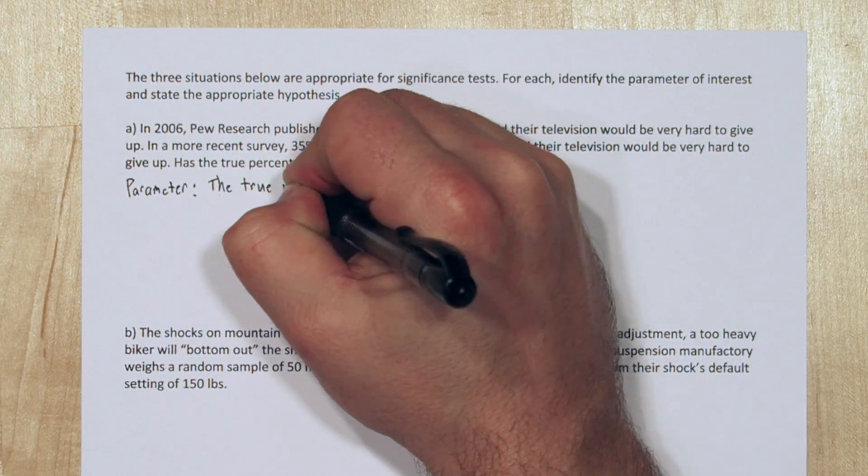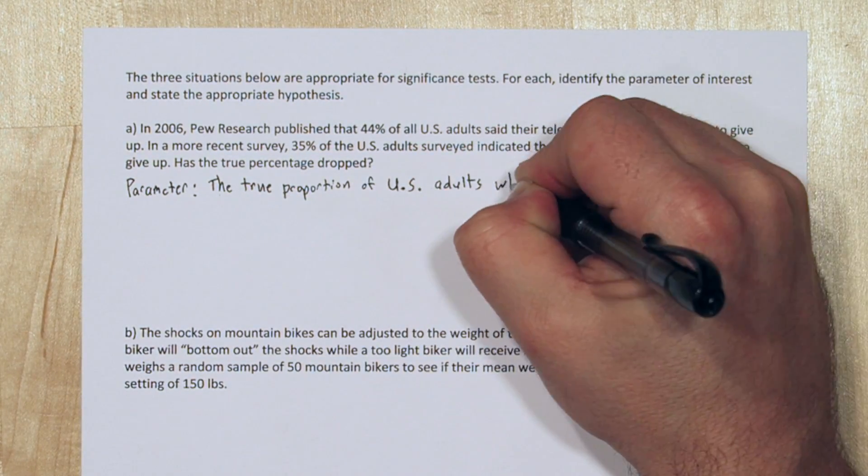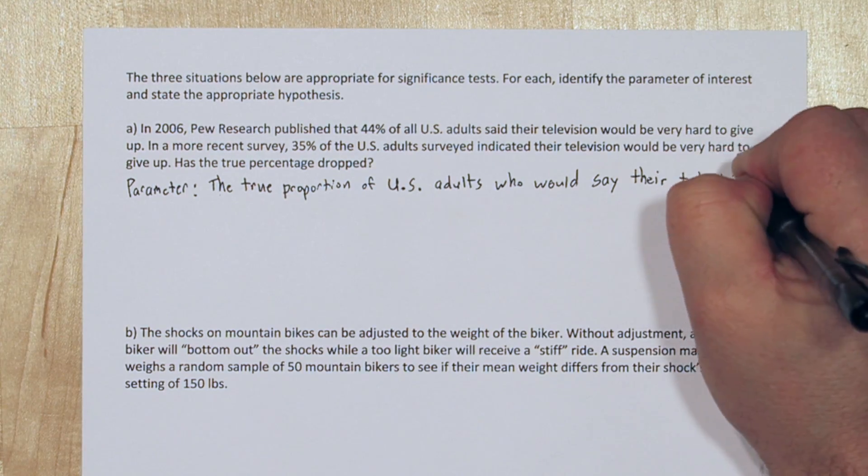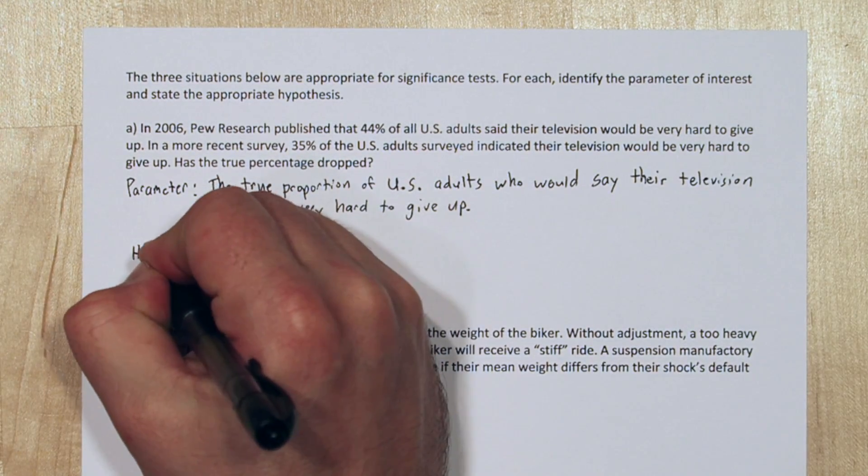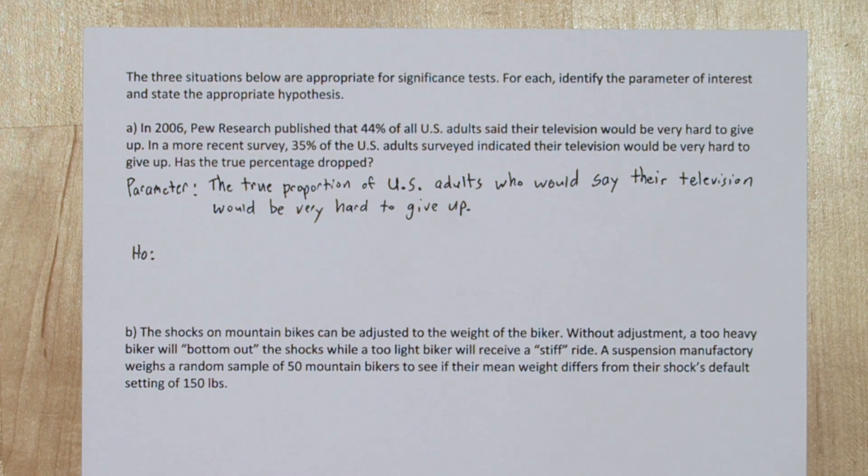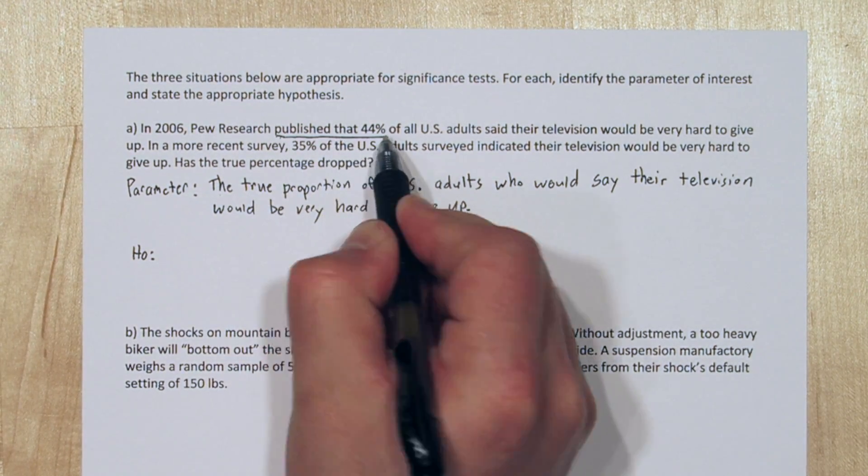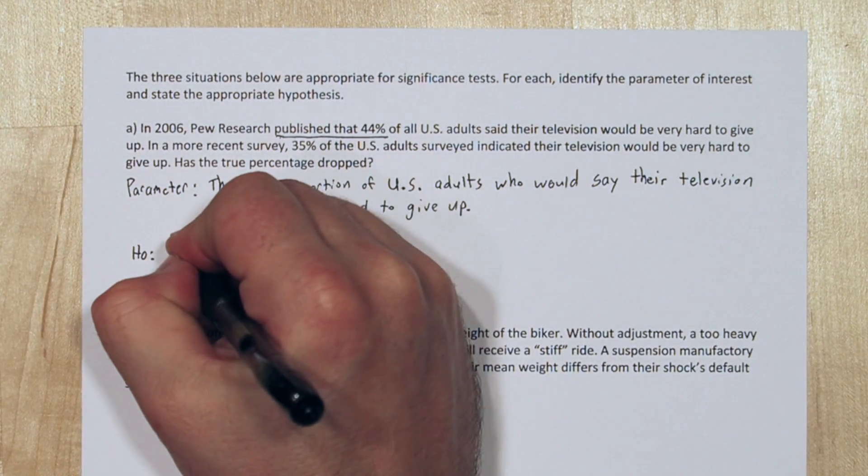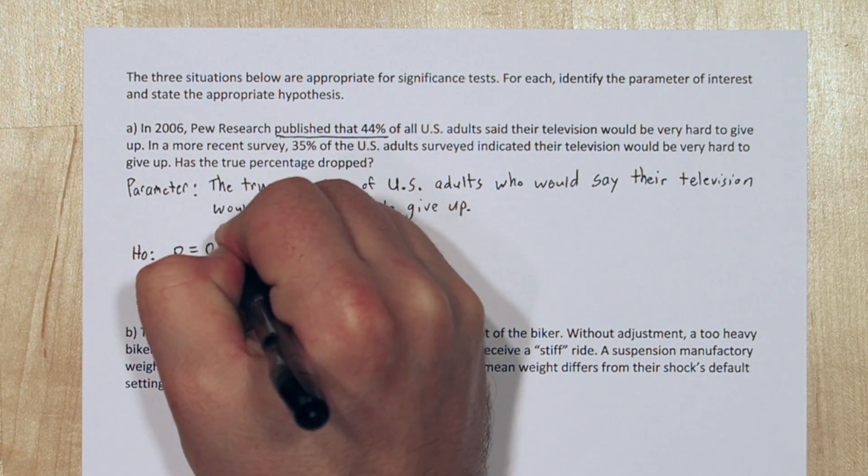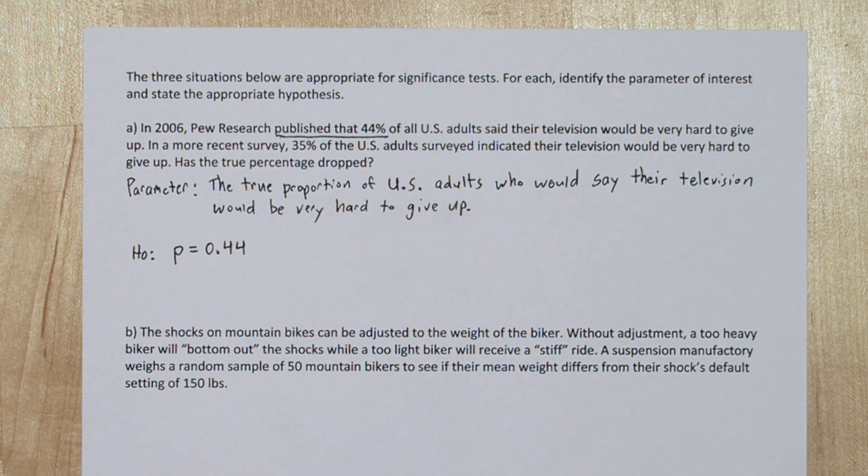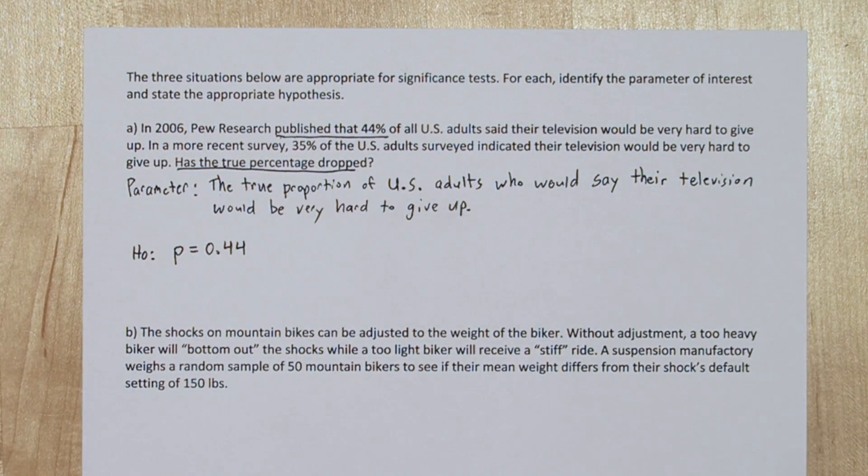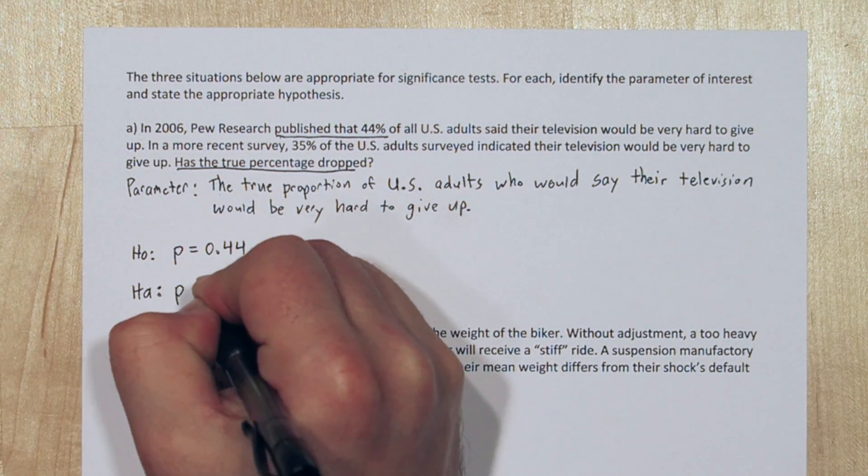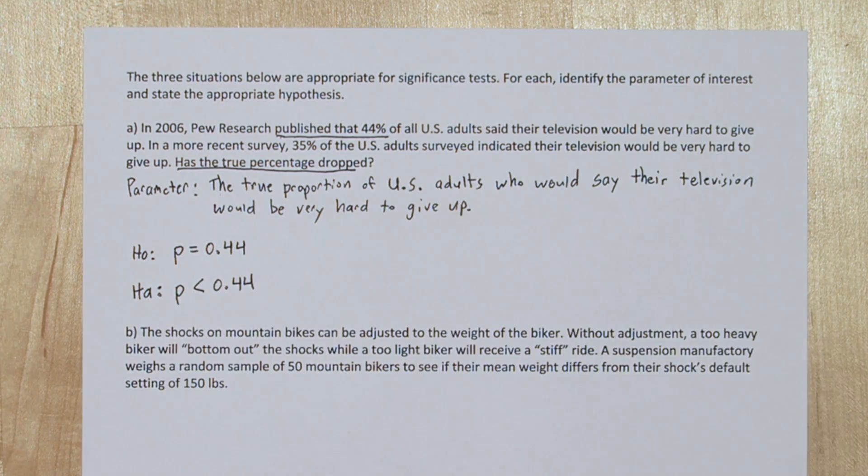In part A, the parameter of interest is the true proportion of U.S. adults who would say their television would be very hard to give up. The published result, the status quo, is that this proportion is 0.44. So that's our null hypothesis: the true parameter equals 0.44. The question of interest is has the true percentage dropped? That's our alternative hypothesis: the true proportion is less than 0.44.